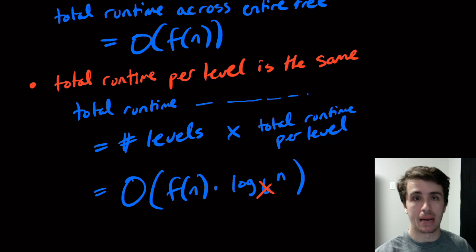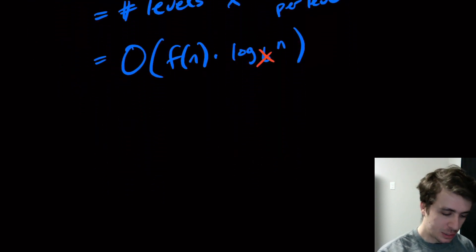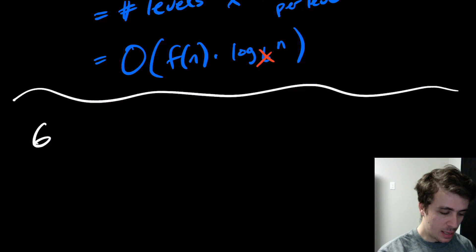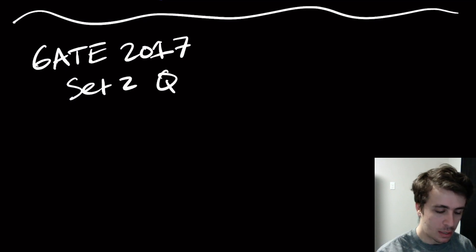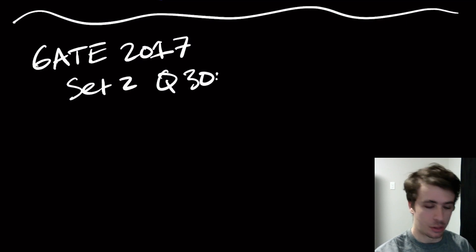This comes from the GATE 2017. It's set 2, and for some reason in some places it says question 30 and some places it's 50, some places it's 56. I'm going to do the one that was actually on the official site which says 30, so this is question 30 and that's how I'm going to list it on my playlist, but on some sites I see 56.